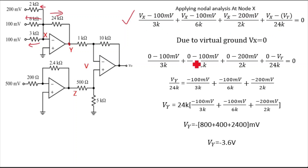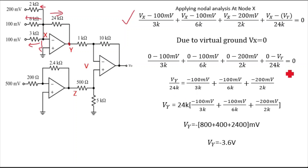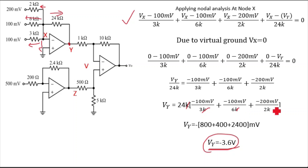Due to virtual ground, VX = 0. Substituting: (0 − 100mV)/3k + (0 − 100mV)/6k + (0 − 200mV)/2k + (0 − VY)/24k = 0. Taking VY/24k to the other side and solving, we get 800 + 400 + 2400 = 3600 millivolts, so VY equals 3.6 volts.